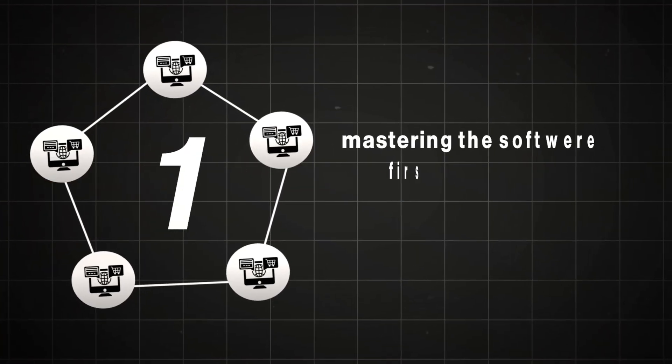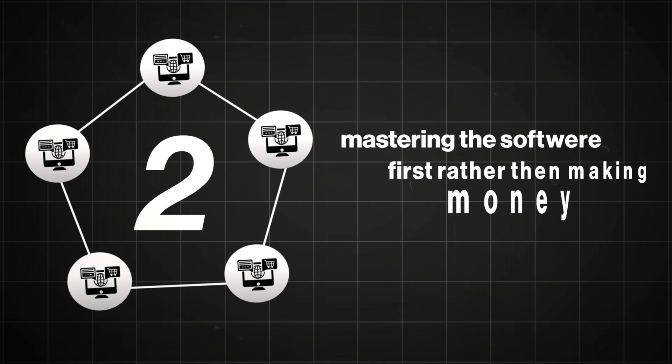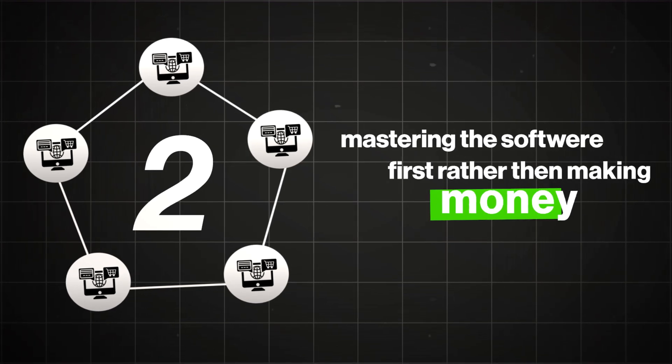The next step is one which I did not do, and this is exactly what cost me a lot of time. Step 2 is mastering the software first instead of focusing on making money. This mistake is probably the difference between a $300 editor and a $2,000 editor — I know because I made the same mistake. Once you have chosen the right software, your next step should be to get really good at it.